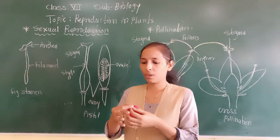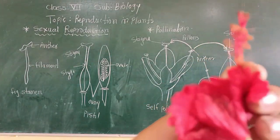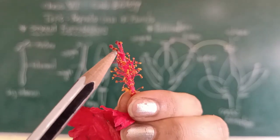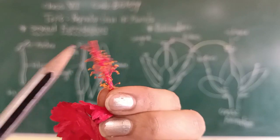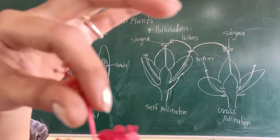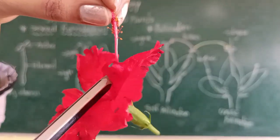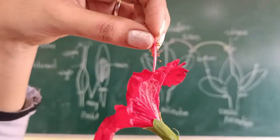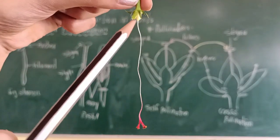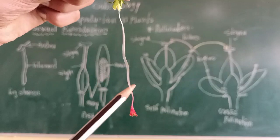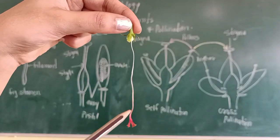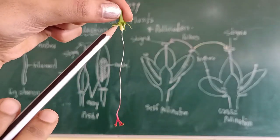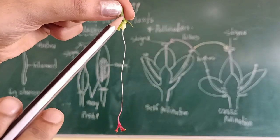Here in this flower we can see these different structures. The uppermost portion is the stigma. Below the stigma there is one tube-like structure through which a tube runs — that is called the style. And at the end there is the ovary, which you can see as the white color portion. So stigma, style, and ovary are the three main parts of the pistil.